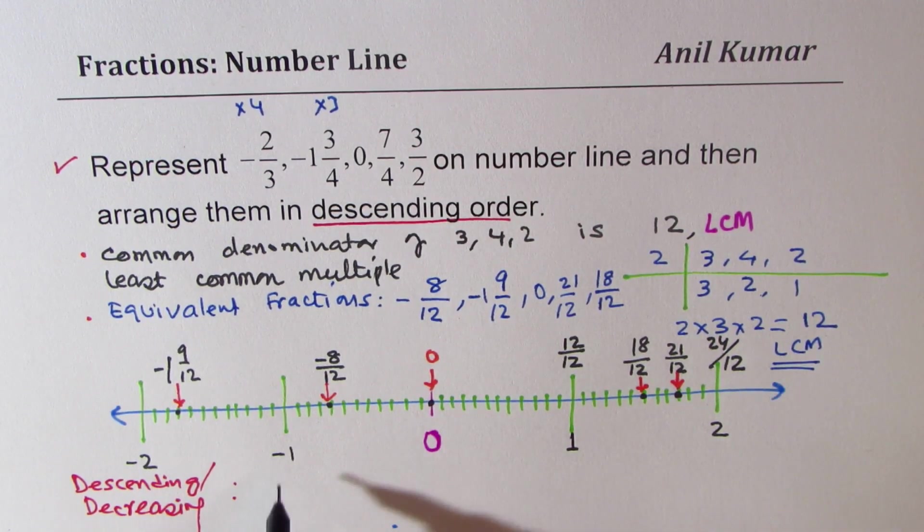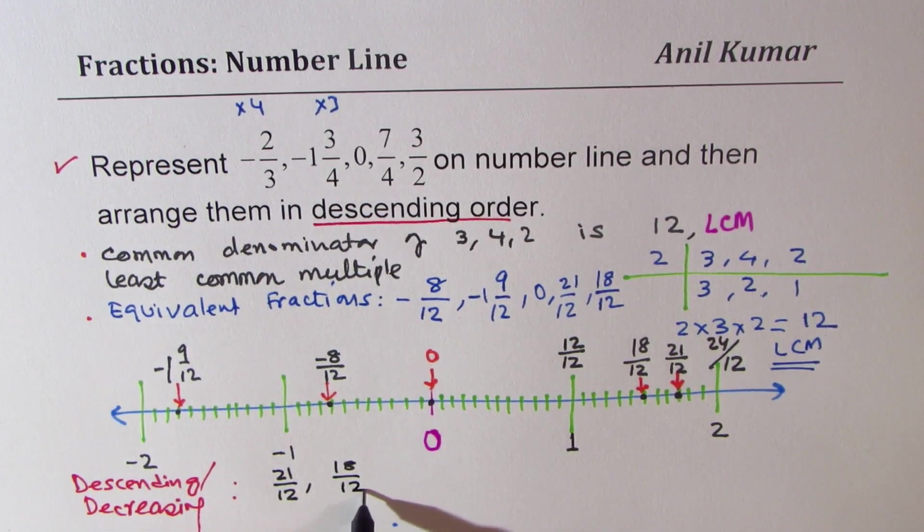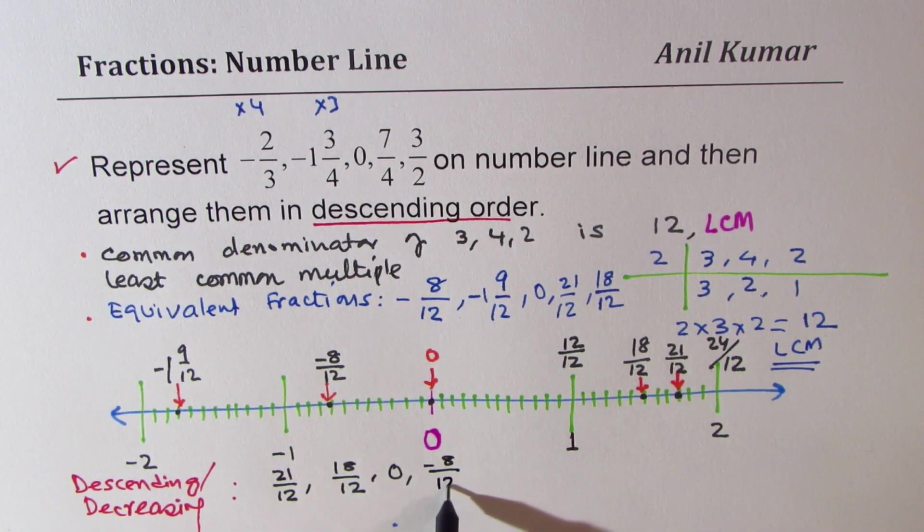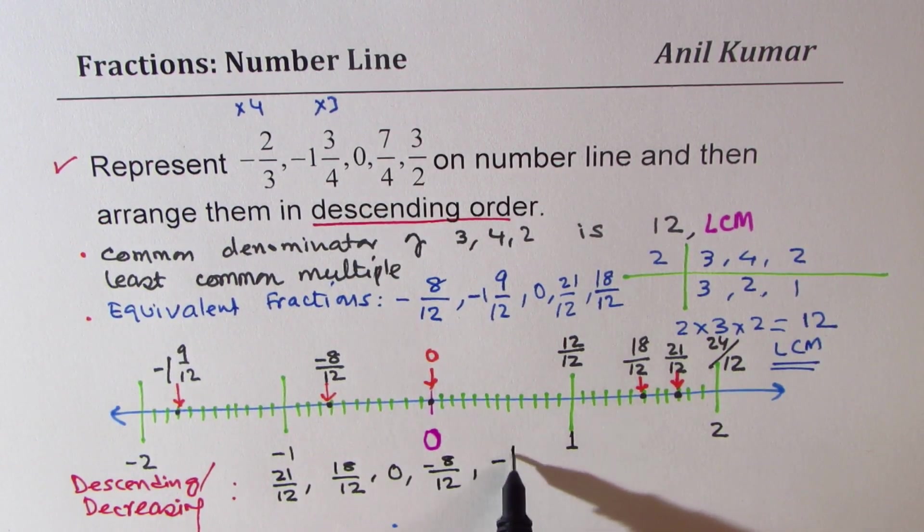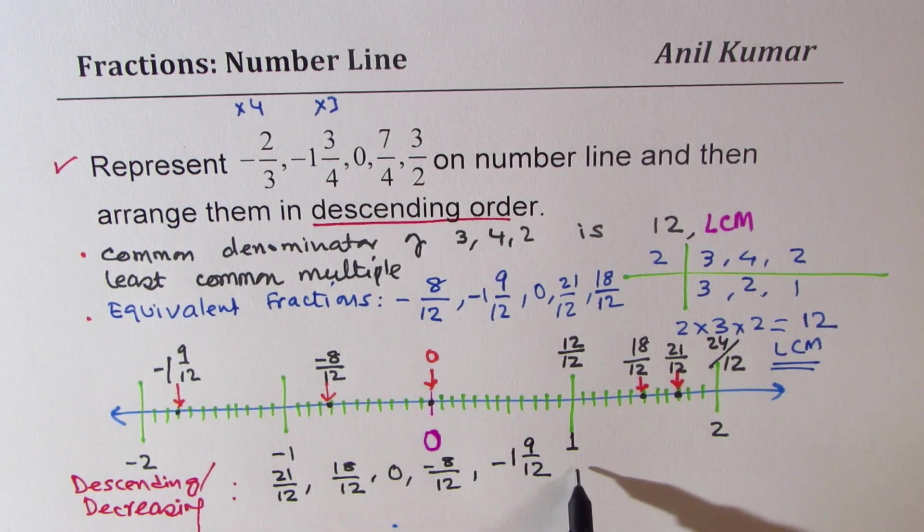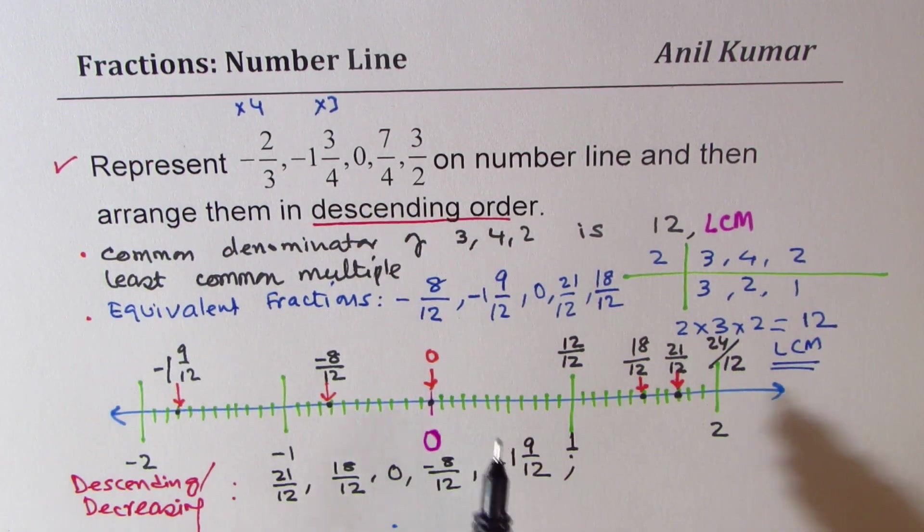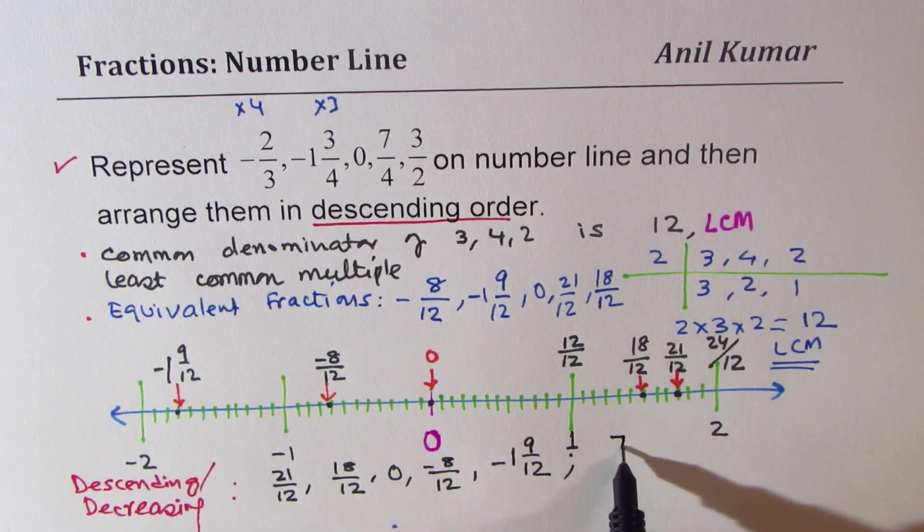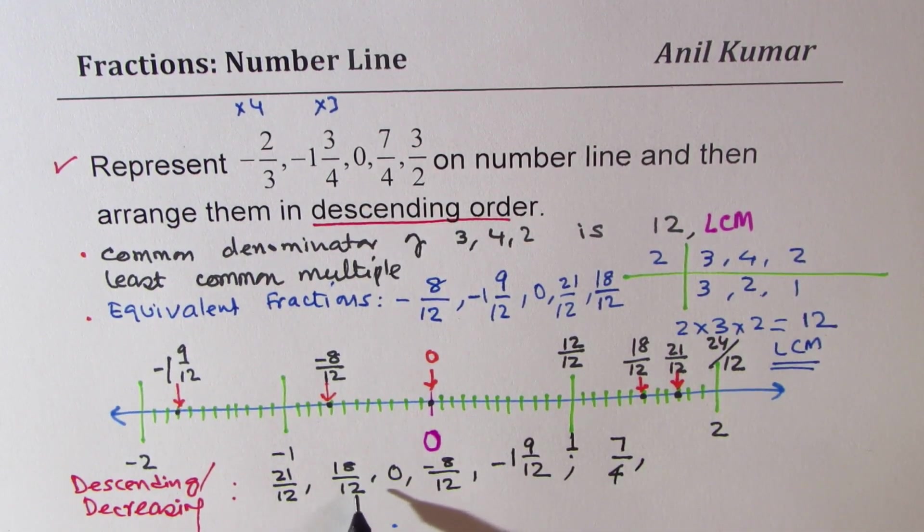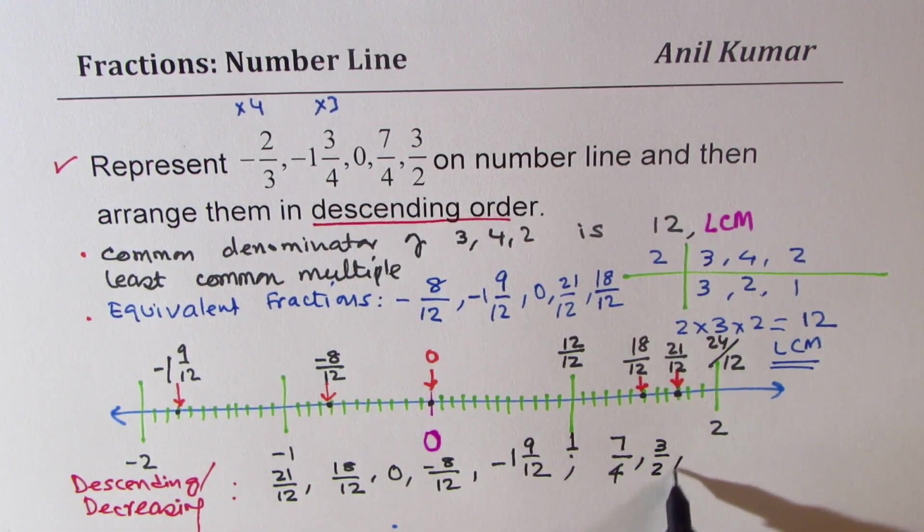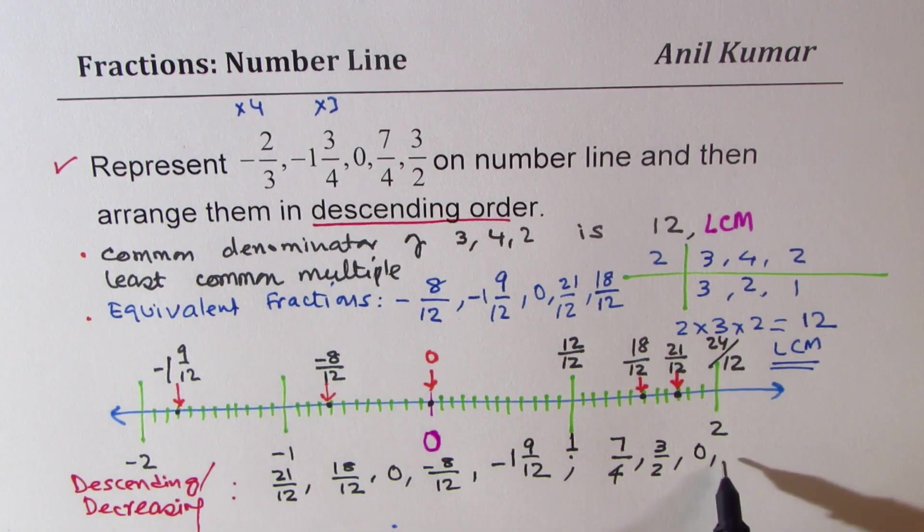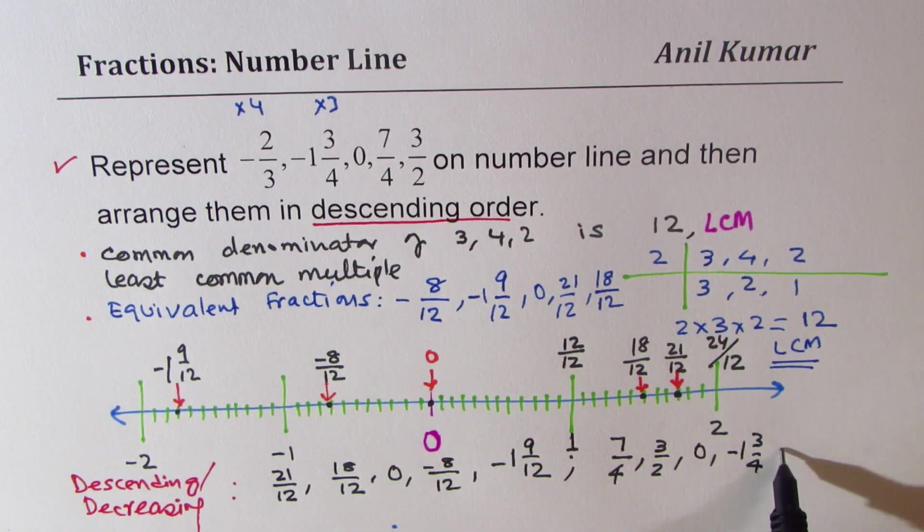So we have to write the highest number first. In our case, the highest number is 21/12. Now 21/12 is same as 7/4. So we'll write both. First we'll write 21/12, and then it is 18/12, and then it is 0, and then it is -8/12, and then it is -1 9/12. So these are the 5 numbers. Now we'll write them as given to us. That is kind of important. So 21/12 was 7/4. So the answer is 7/4. The next 18/12 is the last number 3/2, 1 and a half. And then we have 0. And then we have -1 3/4.